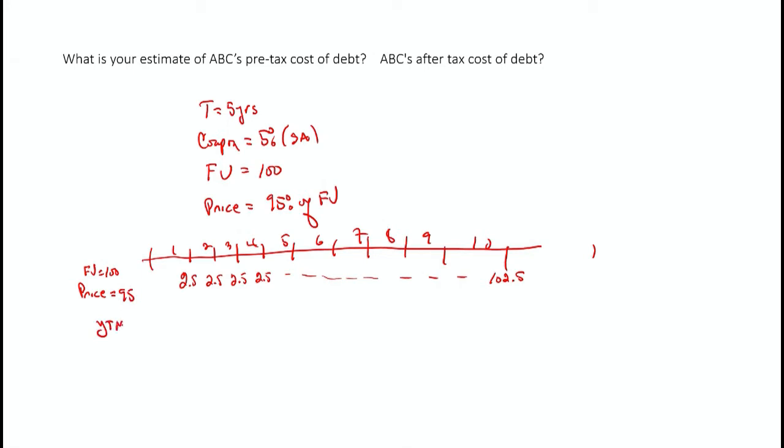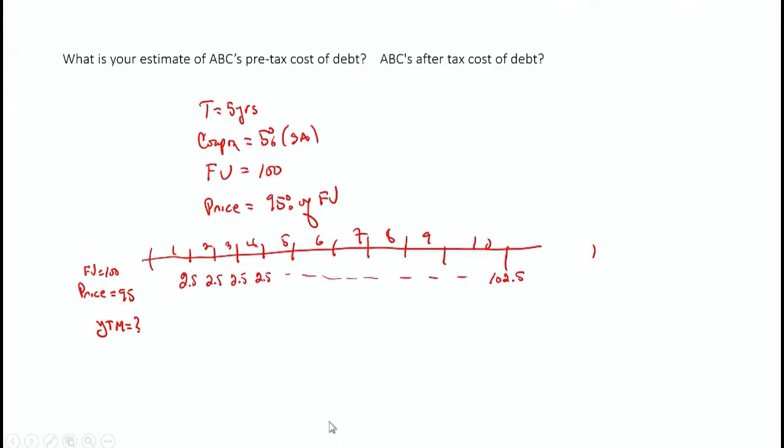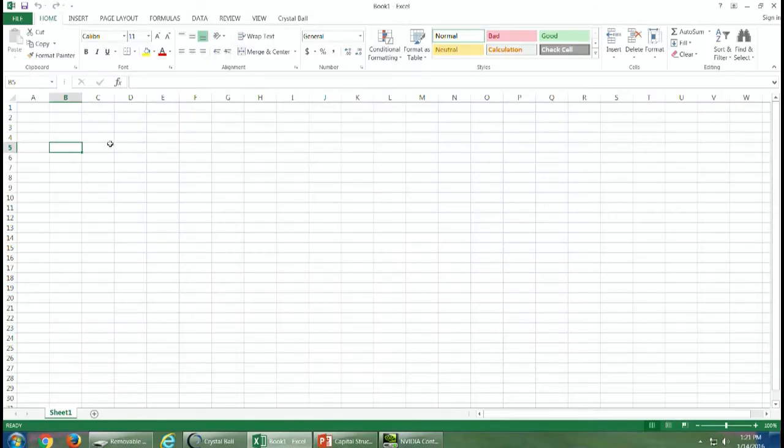So what we want to do is find the yield to maturity, and the easiest thing is to do it in Excel. So let's quickly go over to Excel here, and here we are in Excel. So what do we need to do?